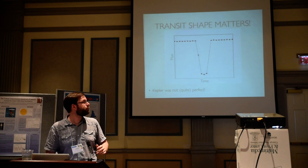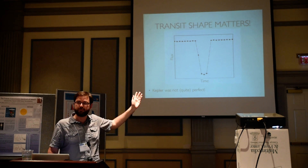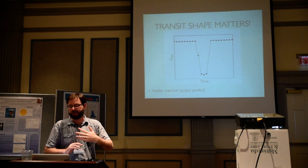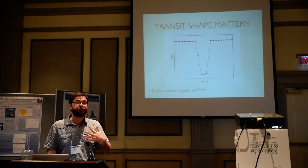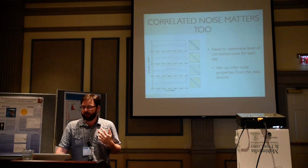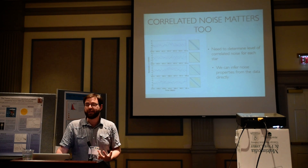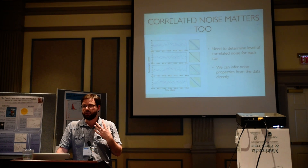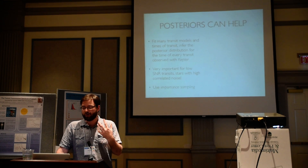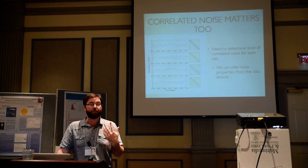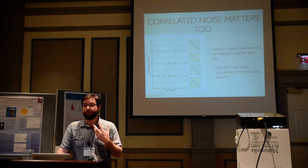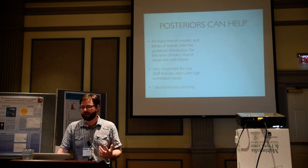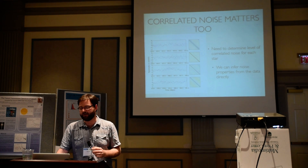The transit shape matters too. Here's a case where there's a missing point: we know right where ingress is, where the planet starts going into transit, but we don't know where egress is, when it comes out. If you don't understand the shape, you'll mess up the time of transit. Also, correlated noise matters — if you assume white noise and there is red noise, you'll underestimate your error bars in all of these.